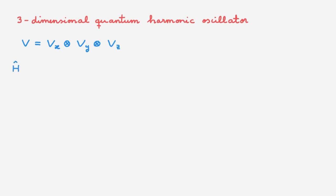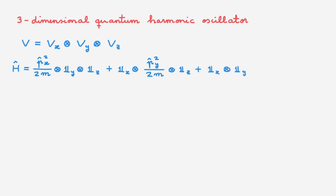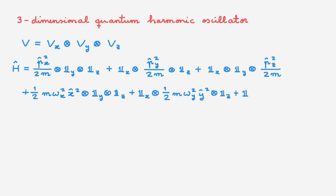The Hamiltonian H includes the kinetic energy, which is given by a term proportional to the momentum squared along the x-direction, a term proportional to the momentum squared along the y-direction, and a term proportional to the momentum squared along the z-direction. And then we also have the potential energy, which depends on a quadratic term in x, a quadratic term in y, and a quadratic term in z. The Hamiltonian H acts on the full state space V, and each of the terms also acts on the full state space V.